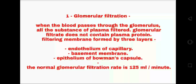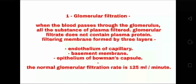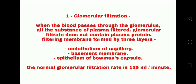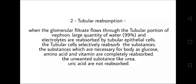Glomerular Filtration. When the blood passes through the glomerulus, all the substances of plasma are filtered. Glomerular filtrate does not contain plasma protein. The filtering membrane is formed by three layers: Endothelium of Capillary, Basement Membrane, and Epithelium of Bowman's Capsule. The normal GFR is 125 ml per minute.